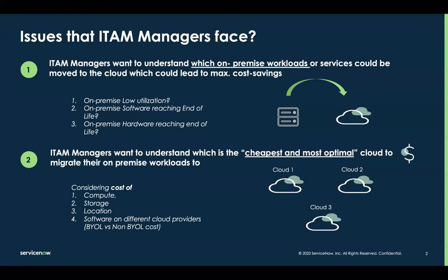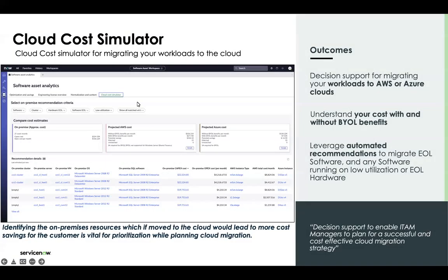This feature tries to address both of these issues. It's a simulator for migrating your workloads to the cloud, providing decision support for migrating workloads to AWS and Azure. As you can see on the screenshot here, it can show you the on-premise costs, the projected AWS cost, and the projected Azure cost. It helps you understand the cost with and without bringing your own license, and it provides recommendations to move to the cloud based on factors like end-of-life softwares or low utilized servers on-prem. It helps identify which cloud is the most cost-effective one to move to.